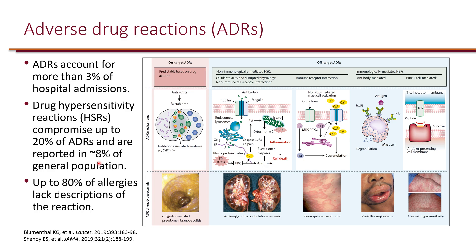A modern way to look at adverse drug reactions is to think of them as on-target and off-target. On-target reactions are based on the mechanism of action of the drug — things we anticipate. For example, antibiotics are intended to kill microorganisms, but we don't want them to affect the microbiome. Most antibiotics are associated with C. diff infections, and that is an on-target adverse drug reaction.